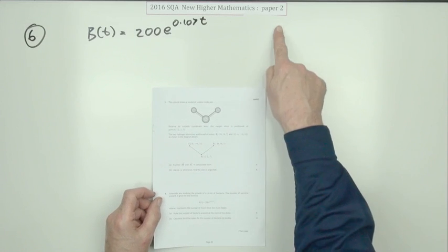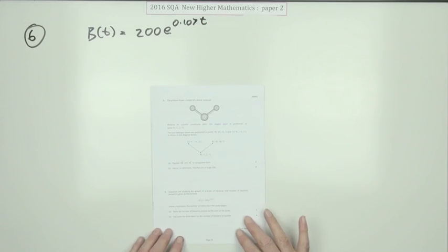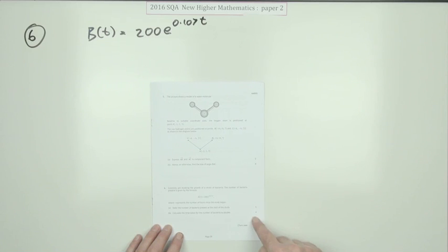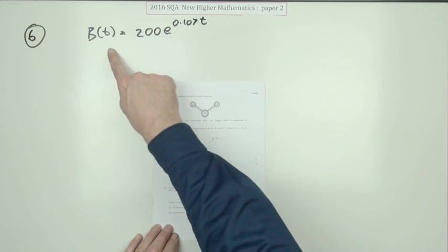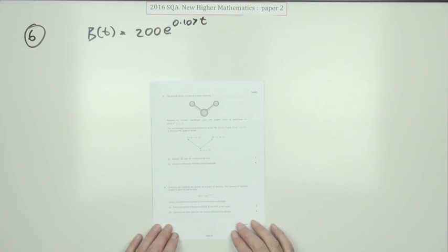This is question six from paper two of the 2016 Higher Maths, worth five marks. It's a growth equation question.